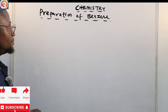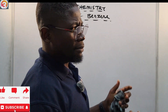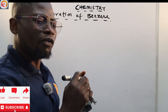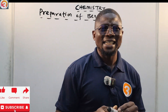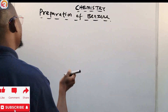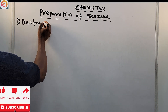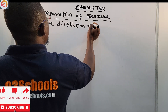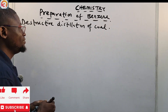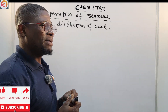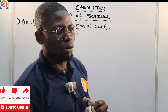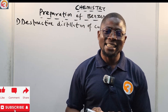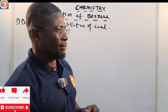Benzene can be prepared by a number of methods. The first and foremost is the destructive distillation of coal, followed closely by fractional distillation of coal tar, and also the polymerization of ethyne in the presence of an organo-nickel catalyst.